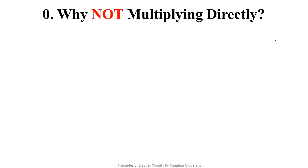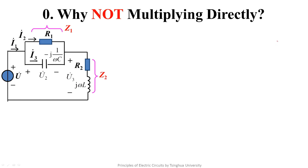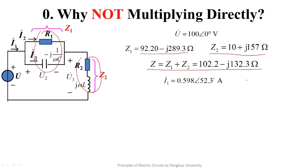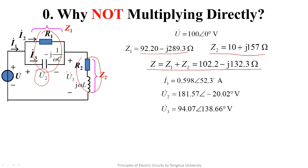Along this line of thinking, we will do an exercise to discuss why we cannot write the product of voltage and current directly. It is the exercise we covered in lecture 64, and here we repeat the key conclusions. We assume the excitation voltage is 100 volts with initial phase angle zero. We calculate Z1, the total impedance, and the impedance of the Z2 part. Z1 and Z2 are connected in series, so we calculate I1, and from I1 we calculate U2 and U3, where U2 is the voltage of Z1 and U3 is the voltage of Z2.